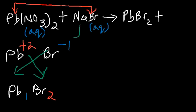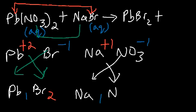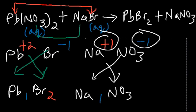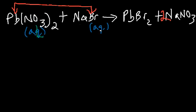Now sodium pairs with nitrate. Sodium is an alkali metal in group one, so it has a plus one charge; nitrate has a minus one charge. Since the charges are equal, they combine in a 1-to-1 ratio, giving NaNO₃. Next we balance the equation: we have two nitrates on the left, so we put a 2 in front of NaNO₃. We have two bromine atoms on the right, so we put a 2 in front of NaBr. The reaction is now balanced.